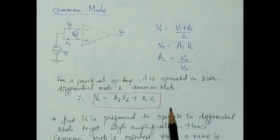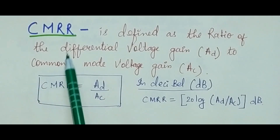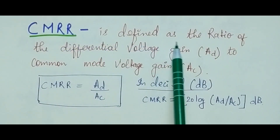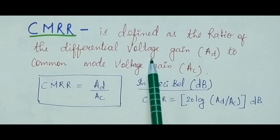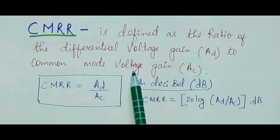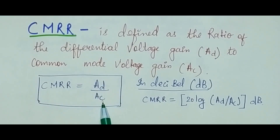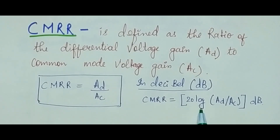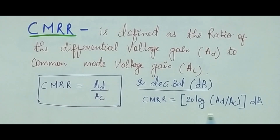Let us define CMRR. CMRR is defined as the ratio of the differential voltage gain AD to the common mode voltage gain AC. Mathematically, CMRR equals AD divided by AC. If you express CMRR in decibels, you multiply by 20 log — so it becomes 20 log of AD/AC. This is very important and will be used to solve many questions related to op-amp.